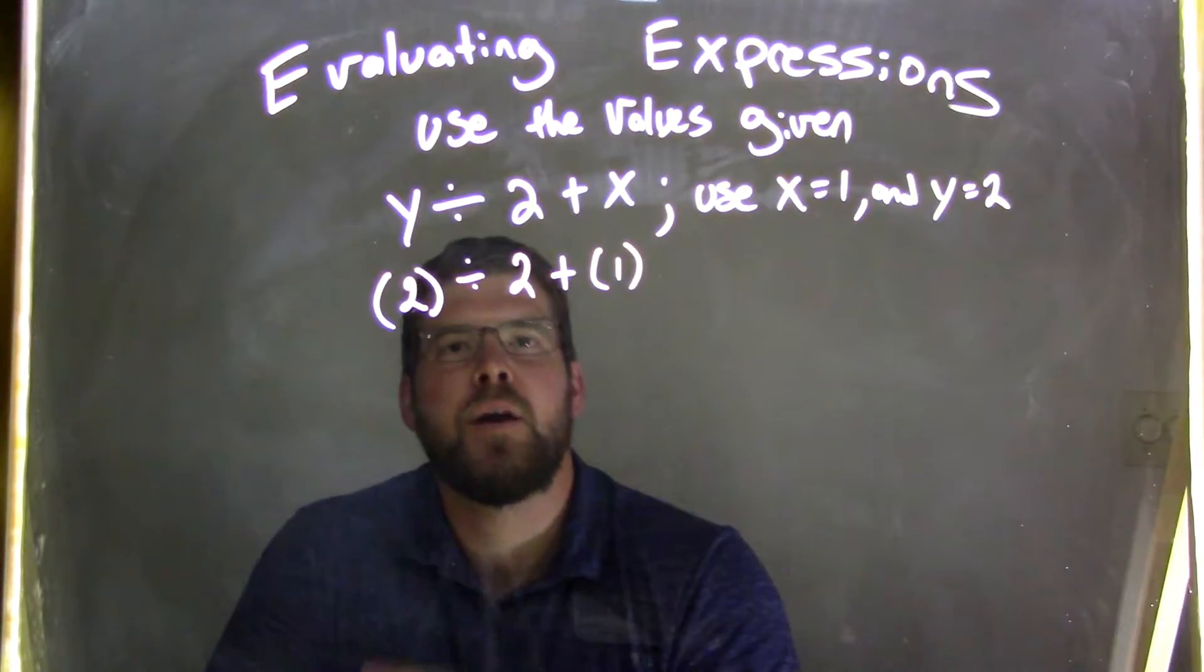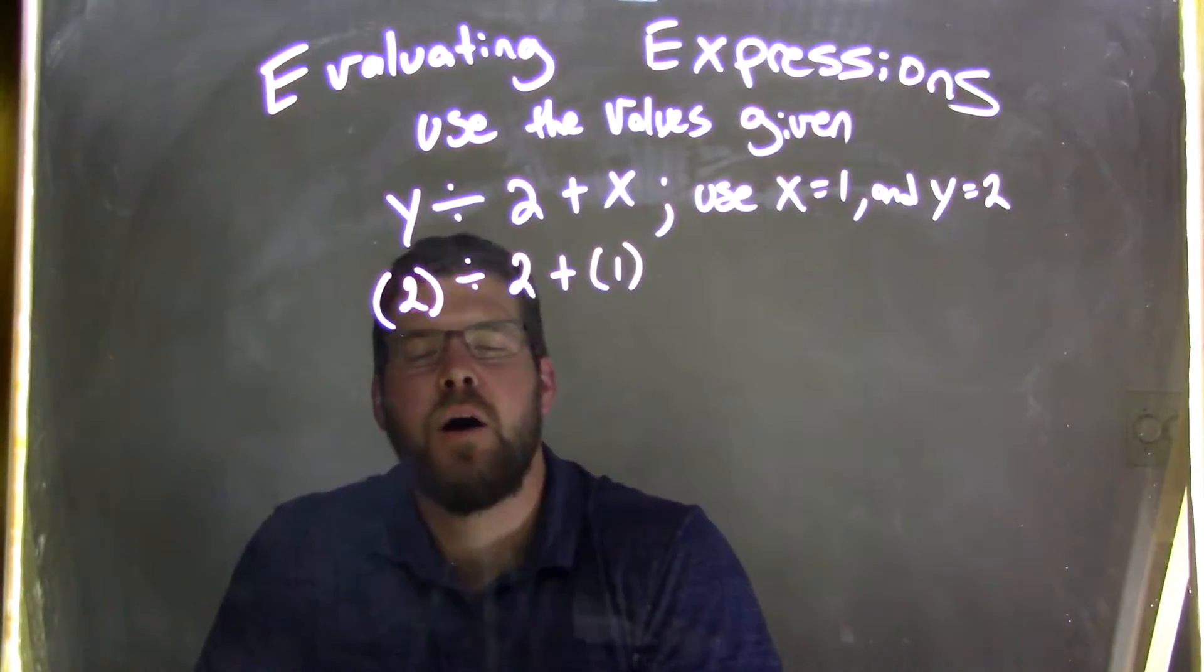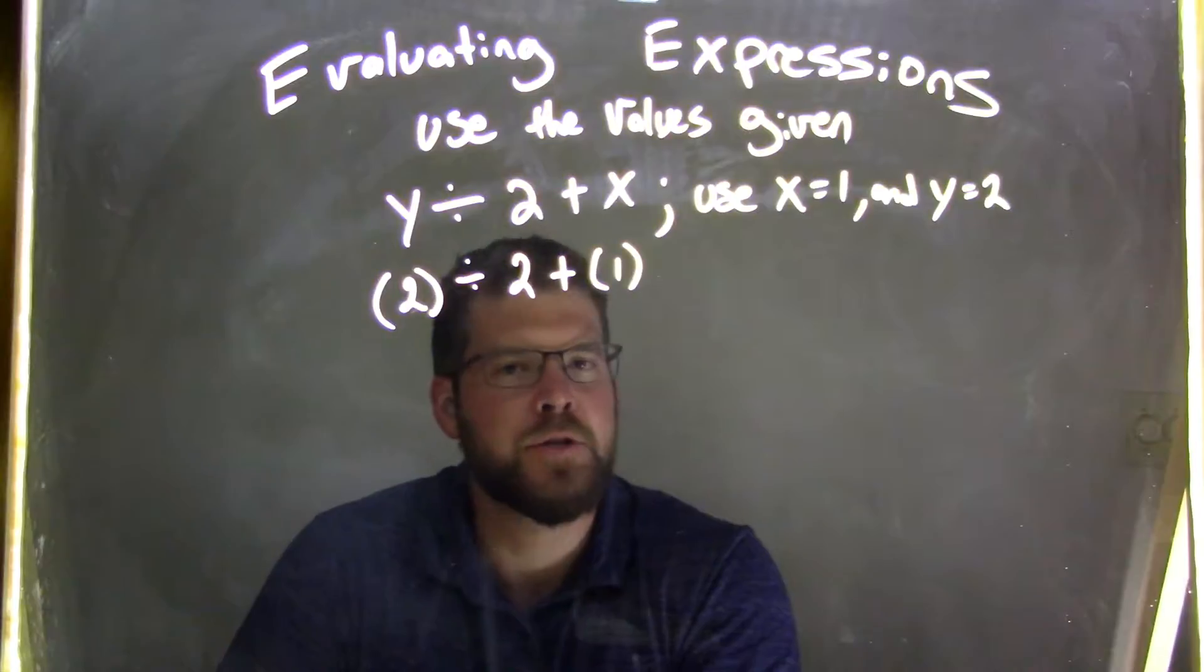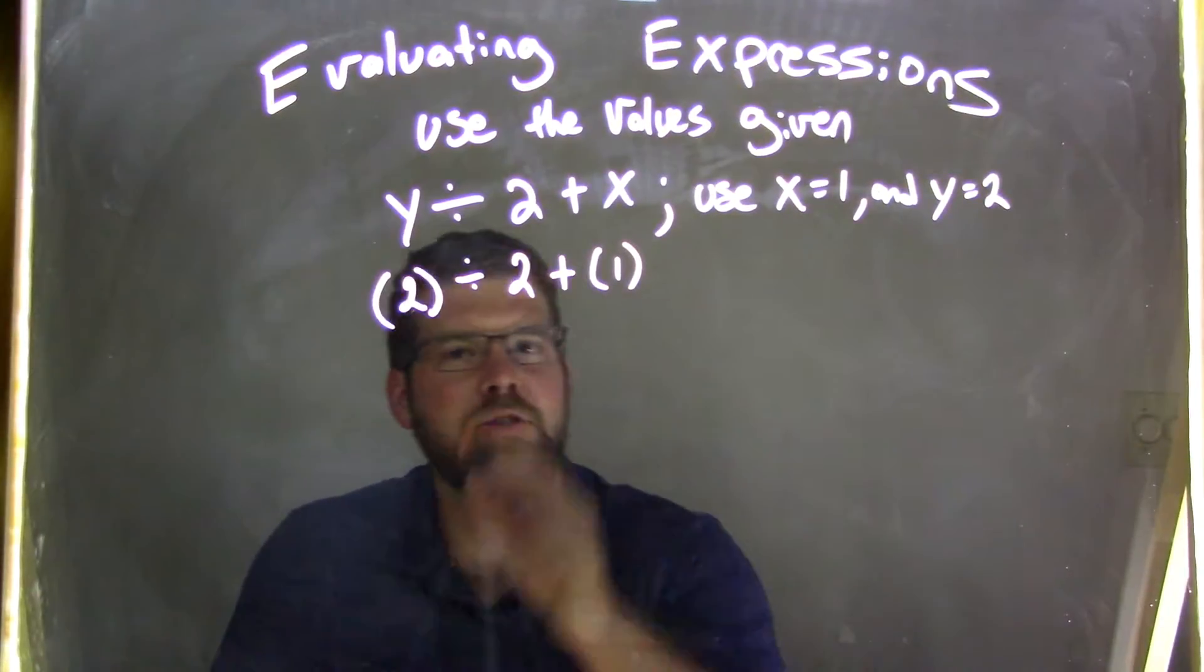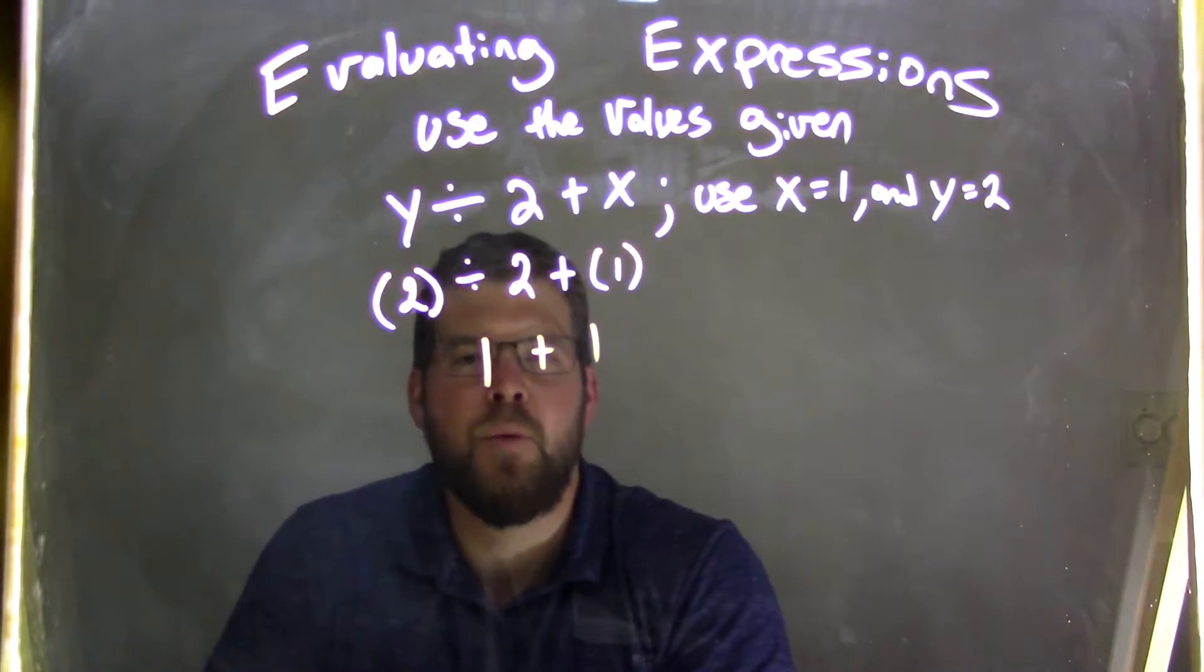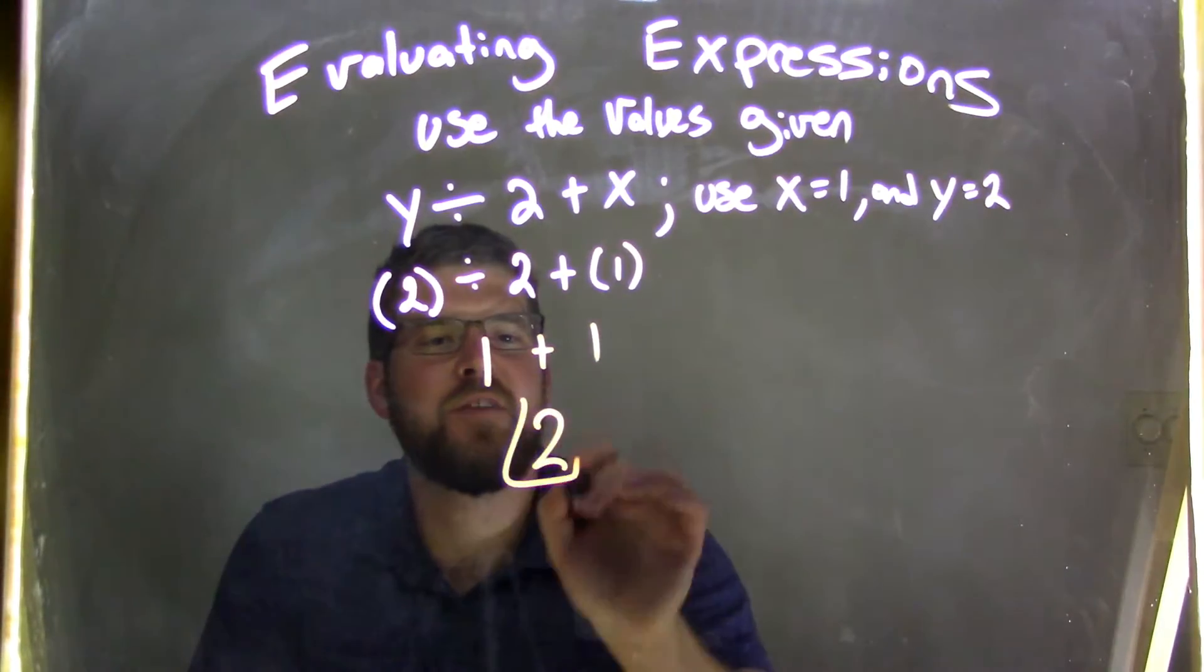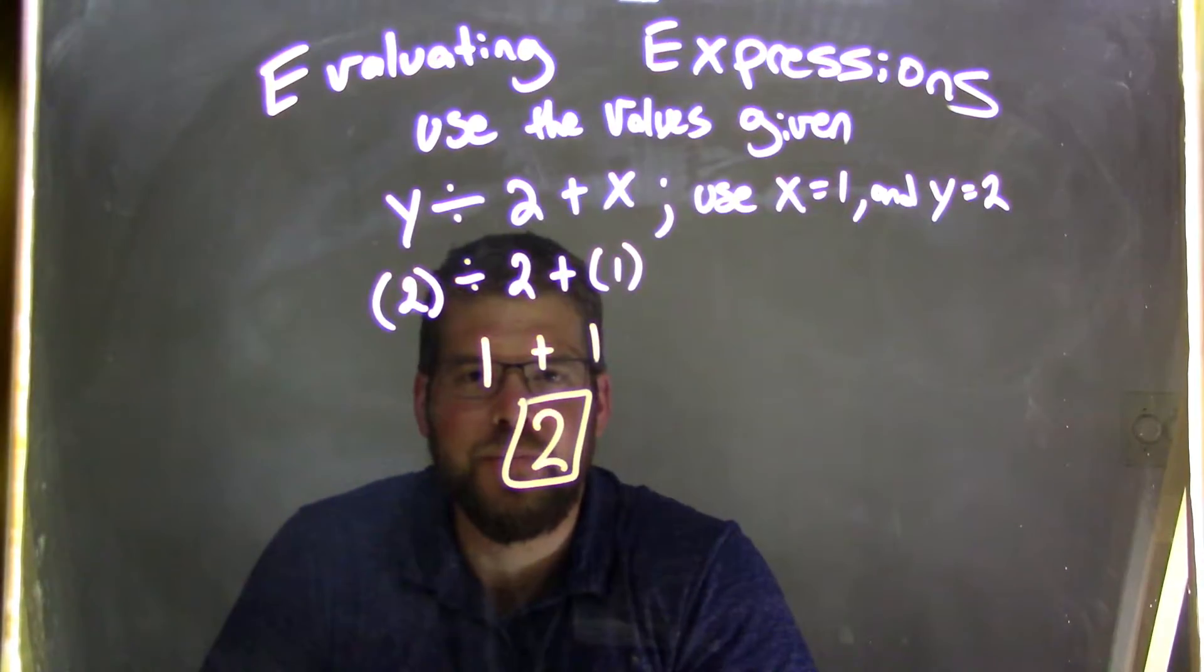So left to right. And so we have division comes before addition. So 2 divided by 2 comes out to be 1 just like any number divided by itself. Bring down the 1 plus 1 and 2 is my final answer.